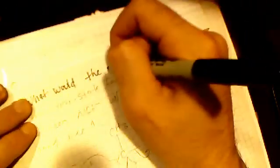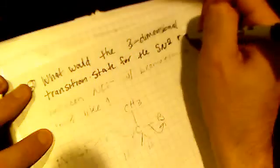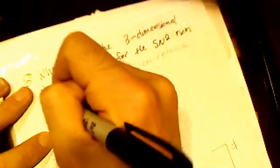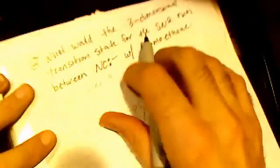All right, so question two: what would the three-dimensional transition state for the SN2 reaction between cyanide anion and bromoethane look like?